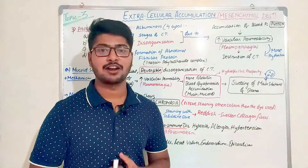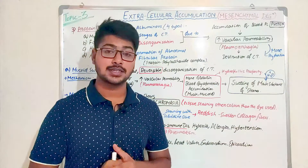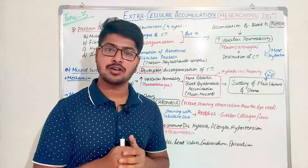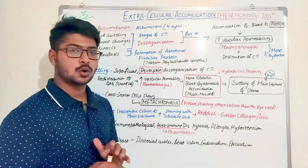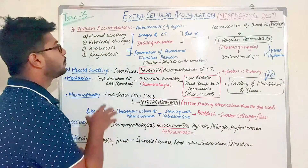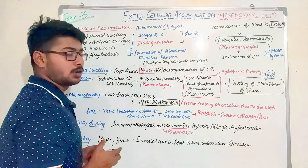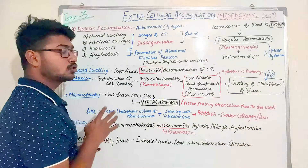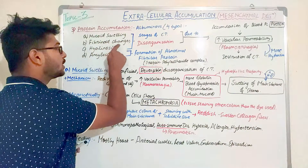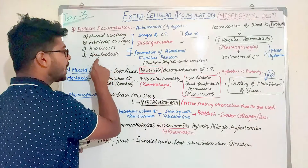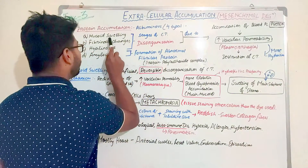My name is Avisek, welcome back to the MBBS stressor channel. Today we are going to discuss the third type of extracellular accumulation — protein accumulations, otherwise known as albuminous type of accumulation. This constitutes four types: mucoid swelling, fibrinoid changes, hyalinosis, and amyloidosis.